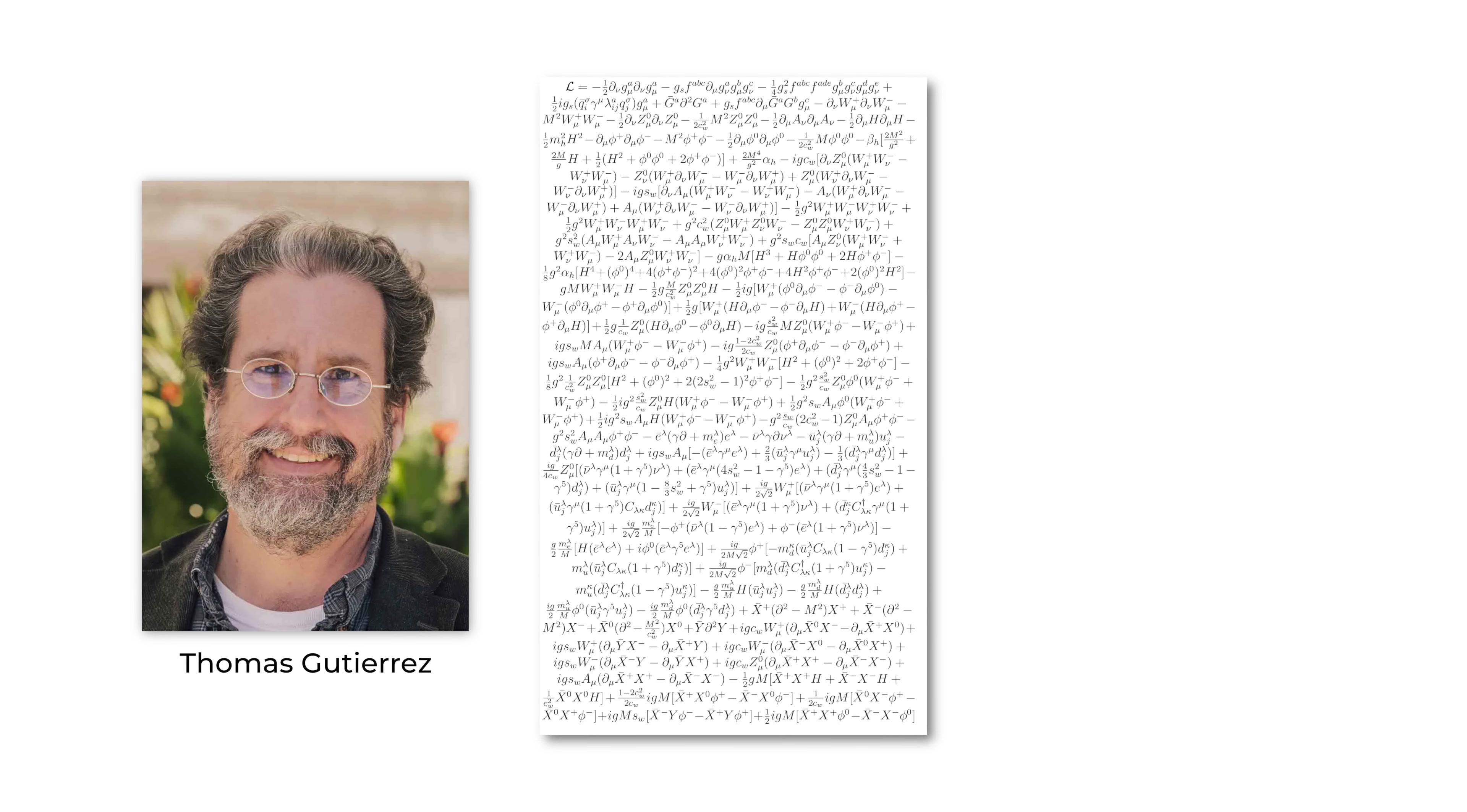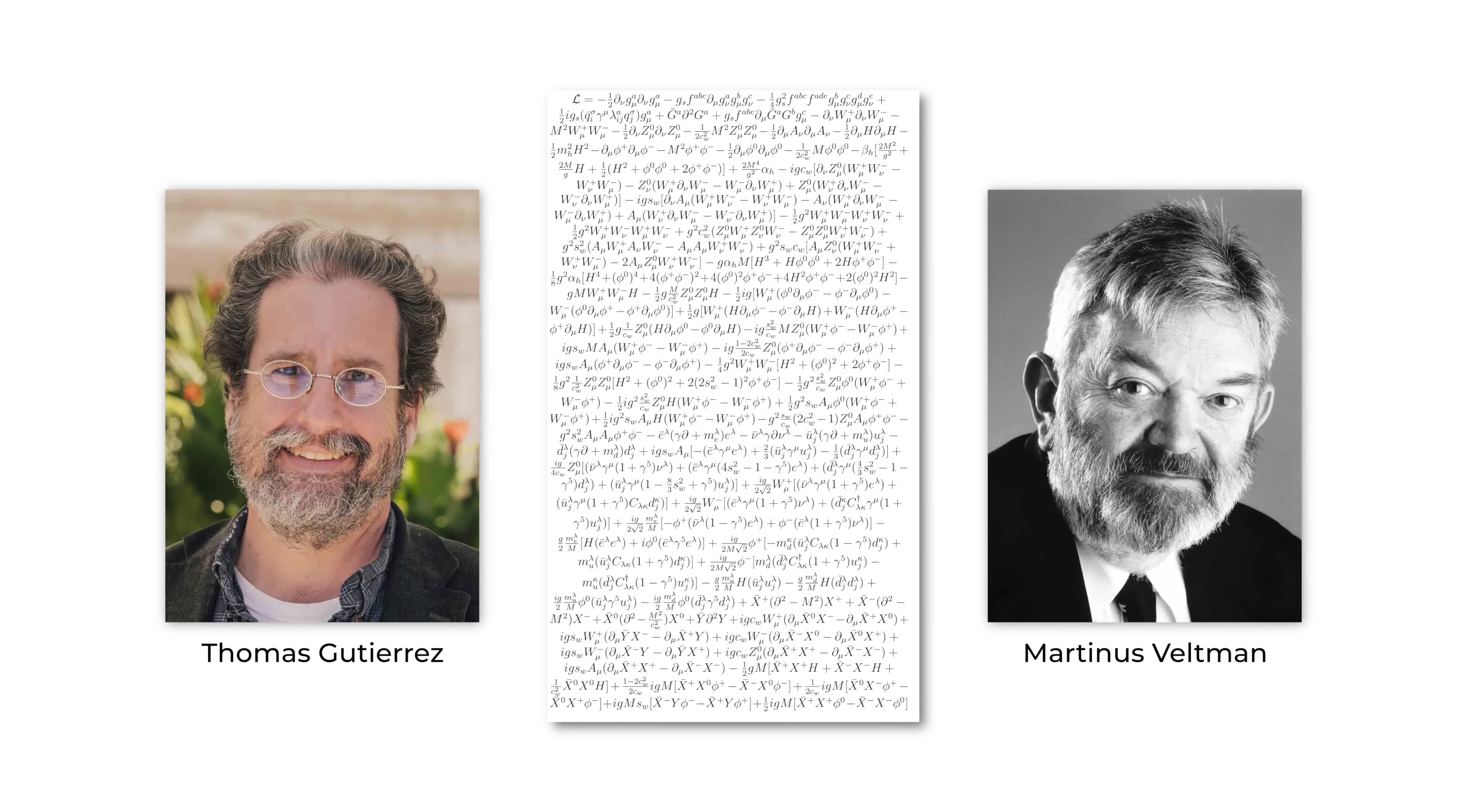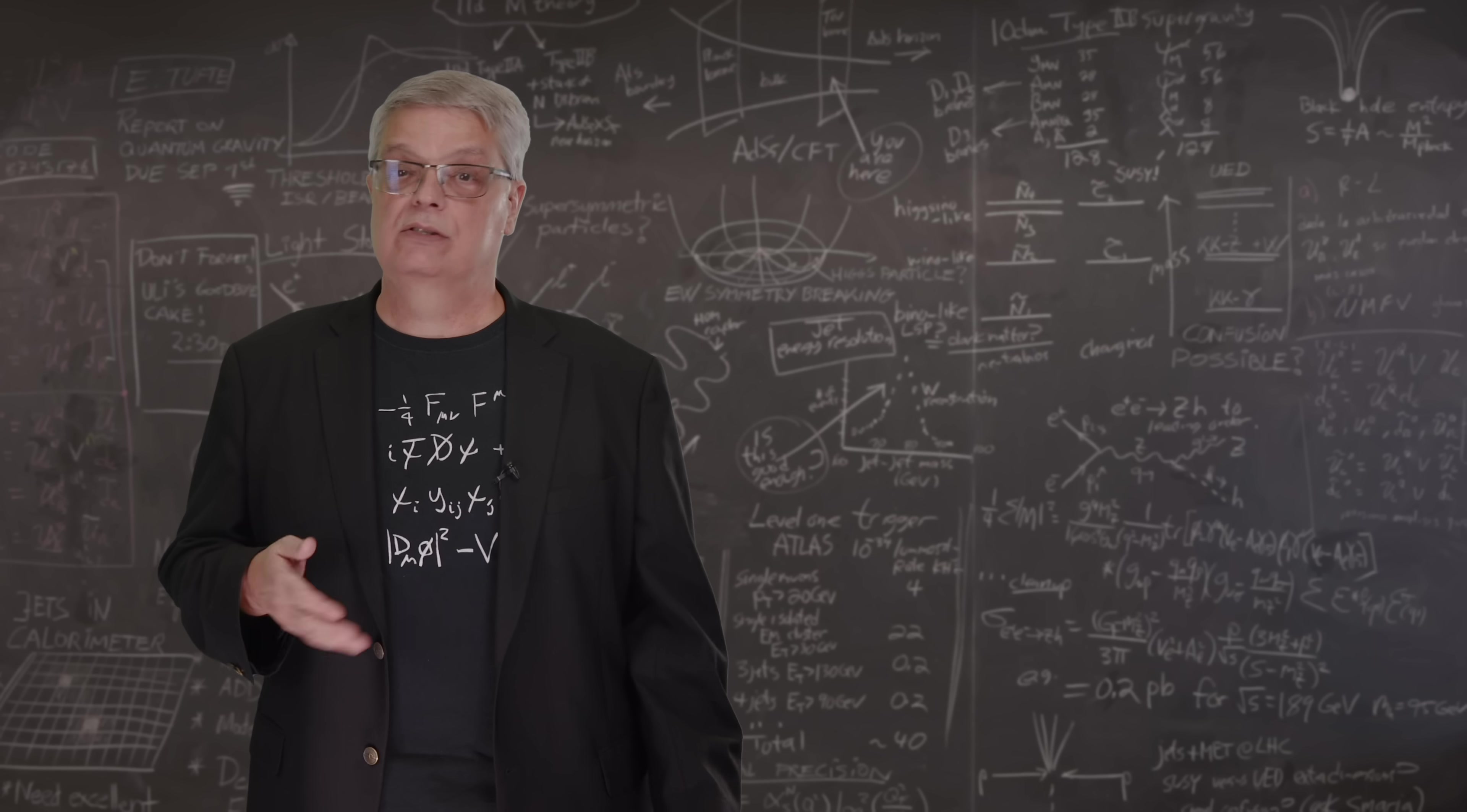The same thing is true for the standard model Lagrangian. You can take the compact equation and write it out longhand, which is way scarier looking than the compact version. This version was written down back in 1999, or thereabouts, by Thomas Gutierrez, who was a professor of physics at California Polytechnic State University. He used a formulation composed by Nobel Prize winner Martinus Veltman. Note that the symbols have changed from the compact version of the equation. For example, where the Greek letter psi meant all fermions, here they're called out specifically, with Es meaning electrons, Ds meaning down-type quarks, Us meaning up-type quarks, etc. So we don't try to make a one-to-one correspondence, but it's kind of fun to see what a mess the equation can be.